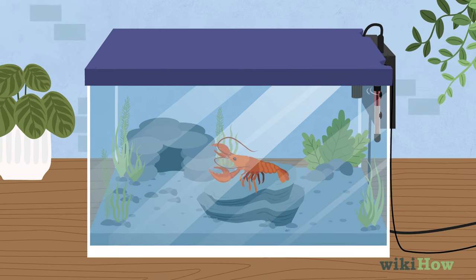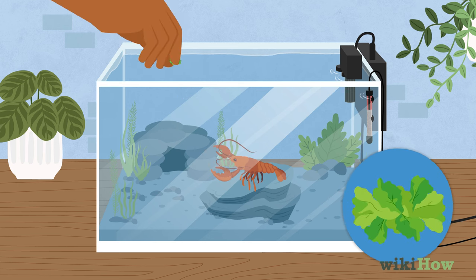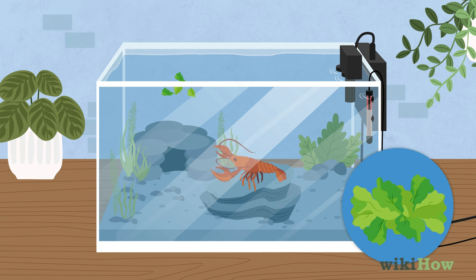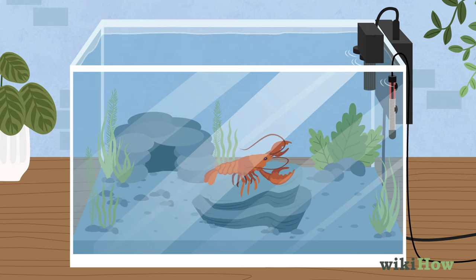Give your crayfish a pinch of sinking shrimp pellets once a day as their main food source. You can also give them fresh veggies as an occasional treat. But don't overfeed them and clean out excess food quickly so it doesn't rot.